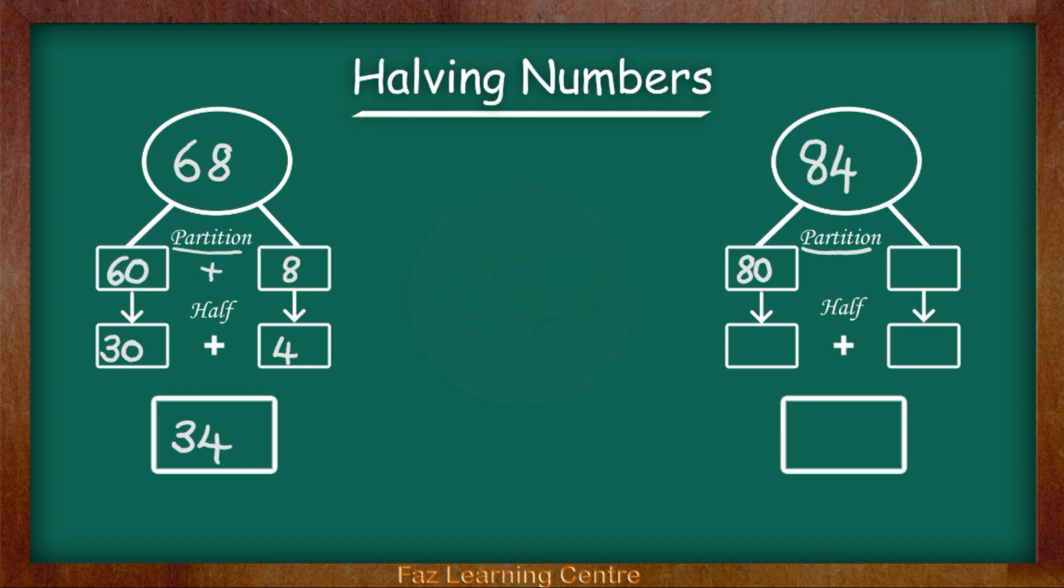84 has 4 ones. So the number 4 goes in the second box. Now we need to think about what is half of 80. Half of 80 is 40. And what is half of 4? Half of 4 is 2. Now we are going to add our findings. We have 40 add 2 which gives us 42.